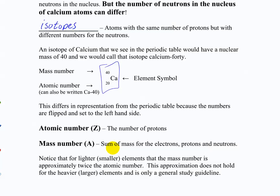The atomic number is the number of protons - the defining characteristic of the atom, called Z. The mass number is the sum of the masses of electrons, protons, and neutrons. So why, if these are all measured in atomic mass units defined as the average mass of a proton and neutron, is the atomic mass of carbon 12.011 and not exactly 12, if it has exactly 6 protons and 6 neutrons? Why is the atomic mass fractional if a proton is one and a neutron is one?